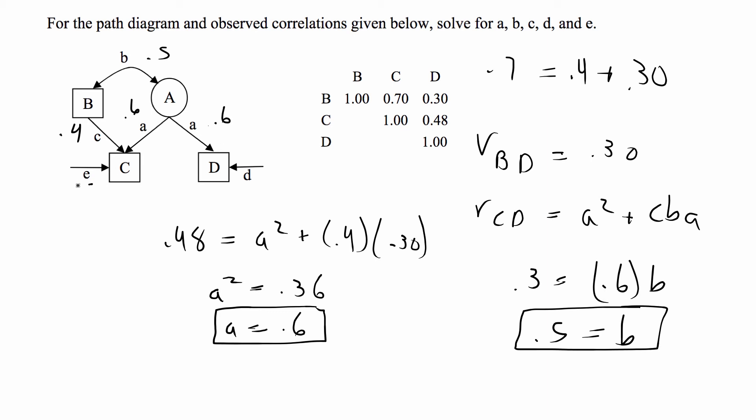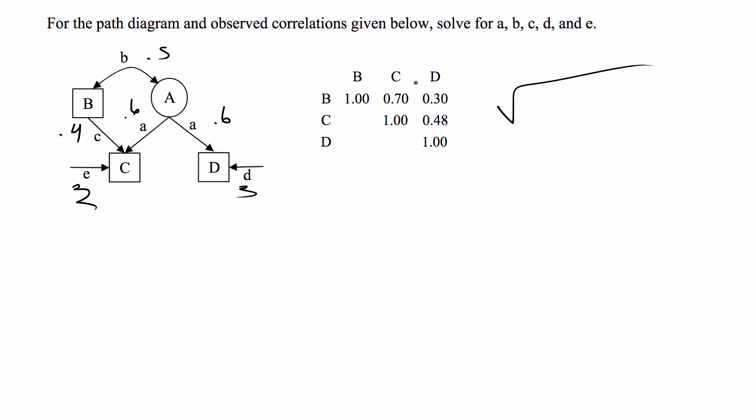And so now we just have E and D that we need to find. What we're going to do is use a variance formula or explained variance, and we're going to take the square root of 1 minus the variance explained, and this will give us a value for D and for E.